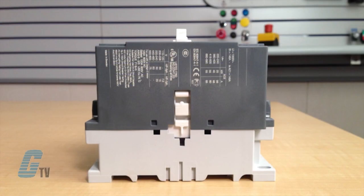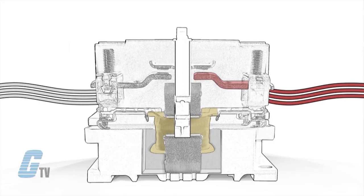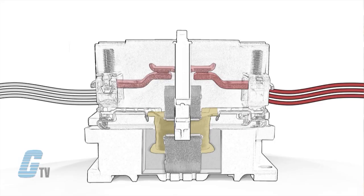Contactors operate when the E-frame is energized by the coil and becomes an electromagnet. The armature, a companion to the E-frame, is connected to a set of contacts. The armature is movable but is held by a spring. When the coil is energized, the movable contacts are pulled toward the stationary contacts because the armature is pulled toward the E-frame. Once the two sets of contacts meet, power can flow through the contactor to the load.